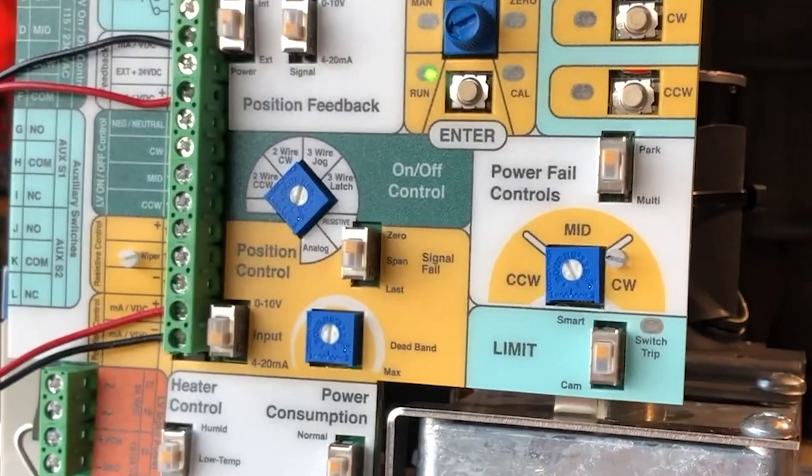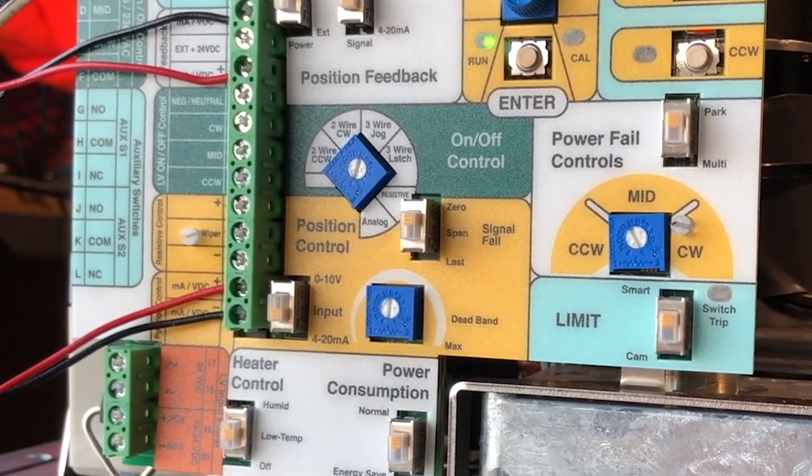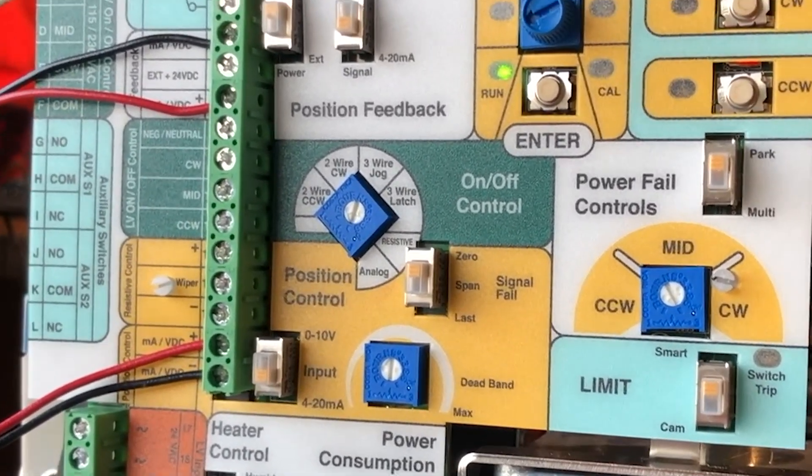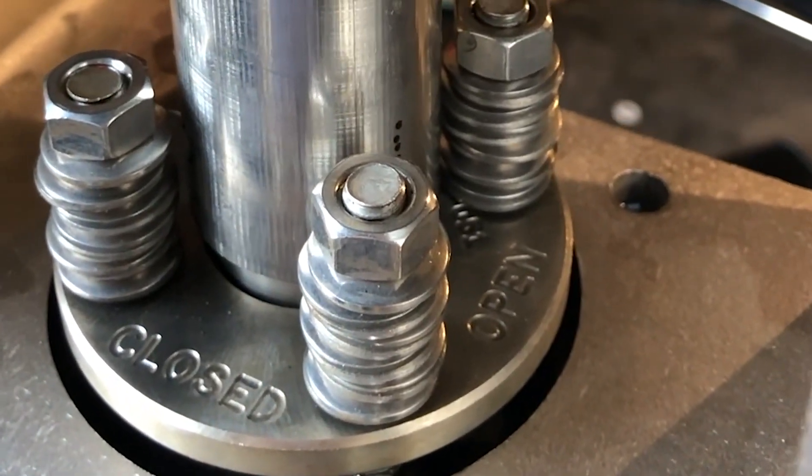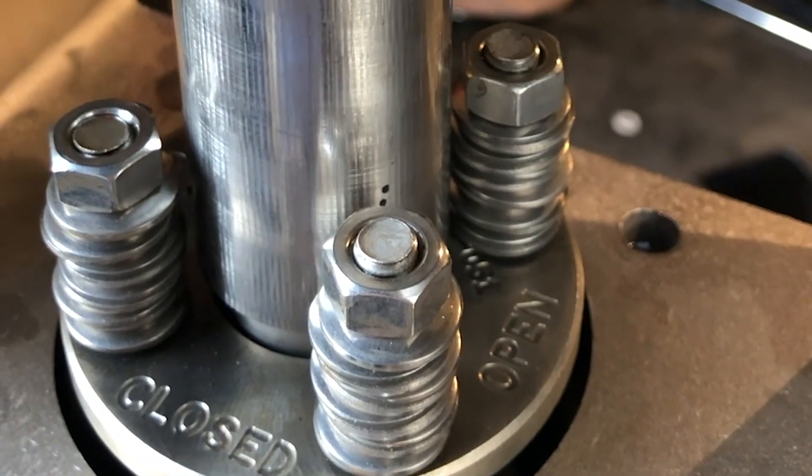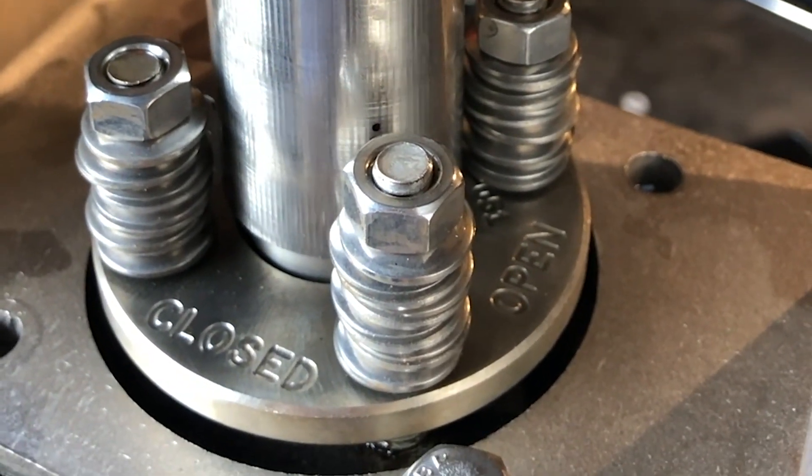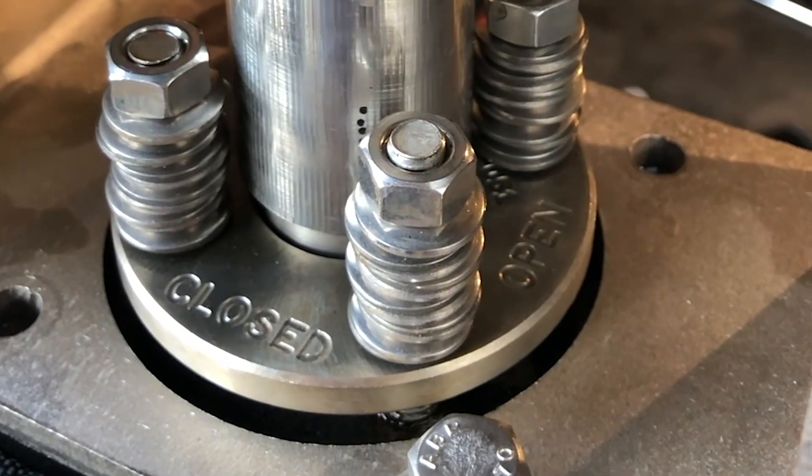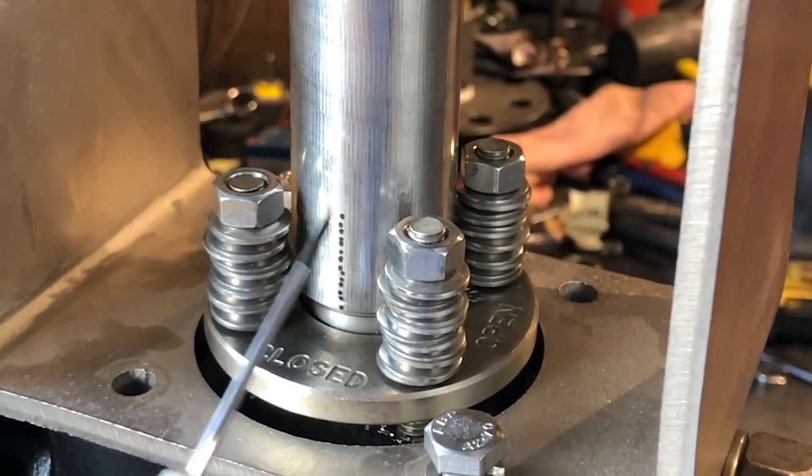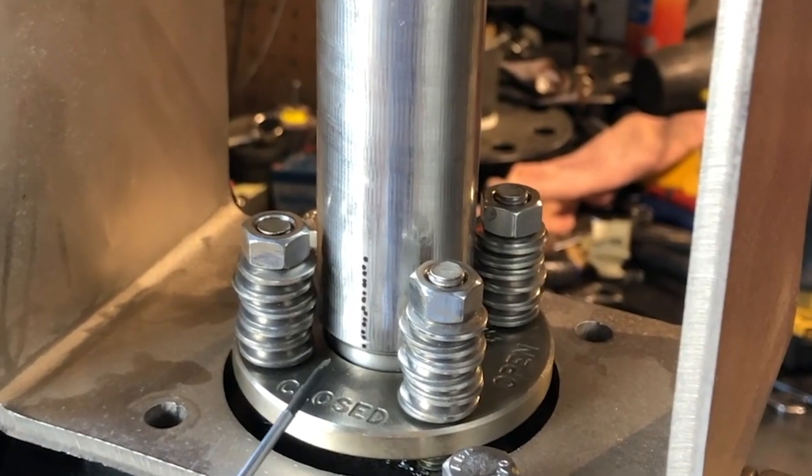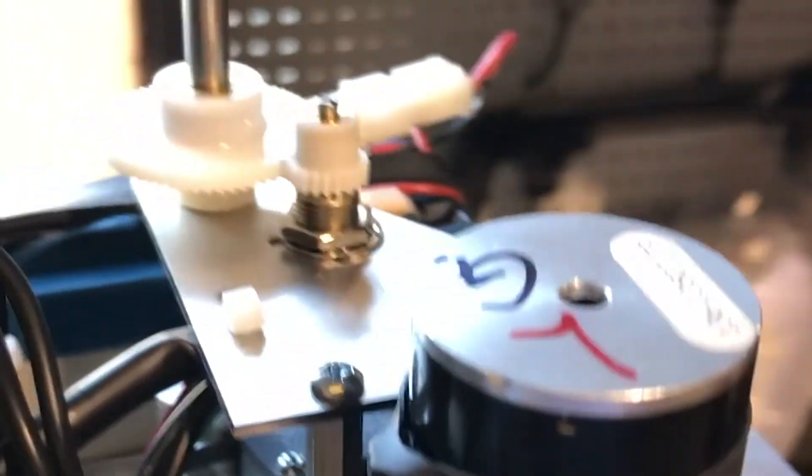The last thing to check is your fail closed position with the loss of power so I'm going to kill my source voltage and the valve should come back to the complete closed position. You can verify that with your indicator on your shaft of your valve. And also by the notch on the main shaft of the actuator.